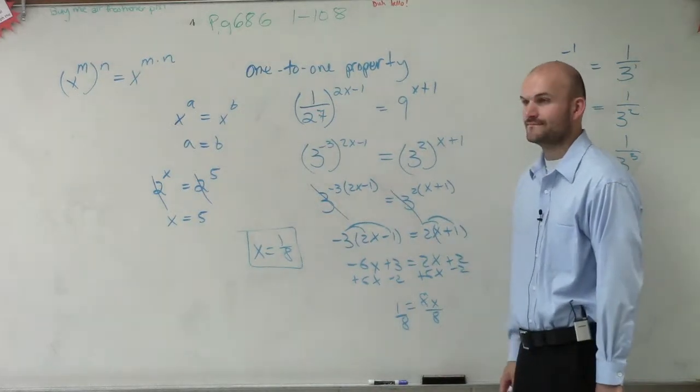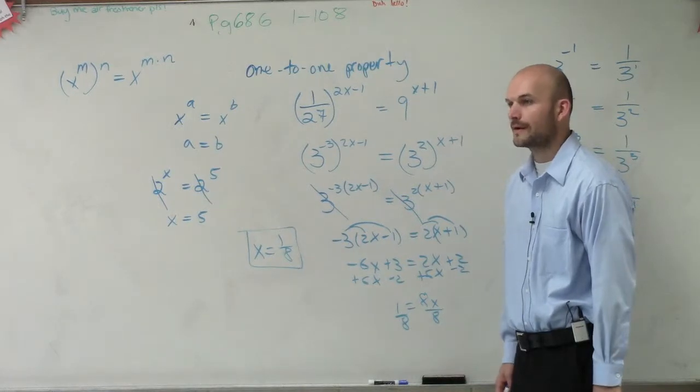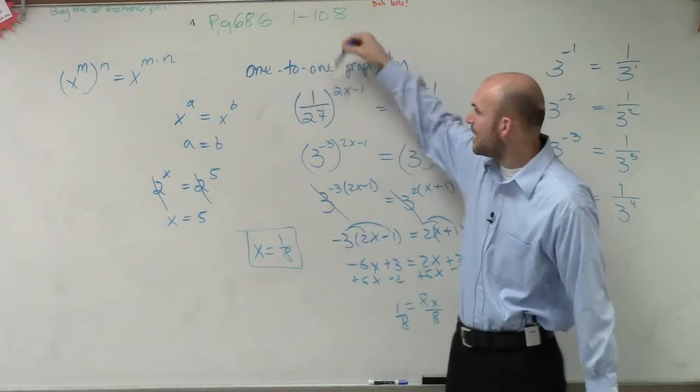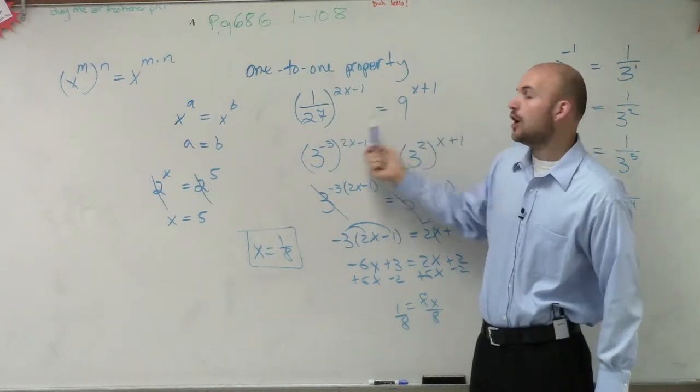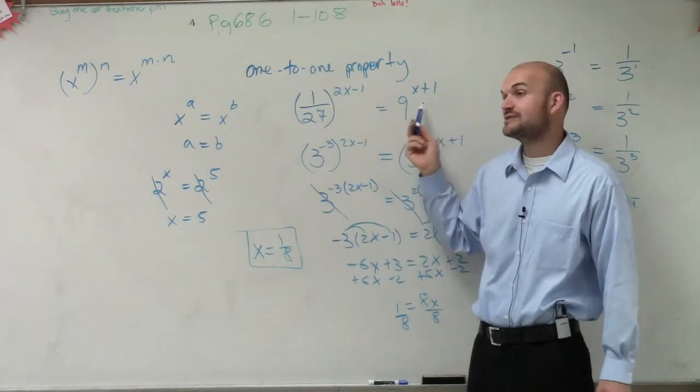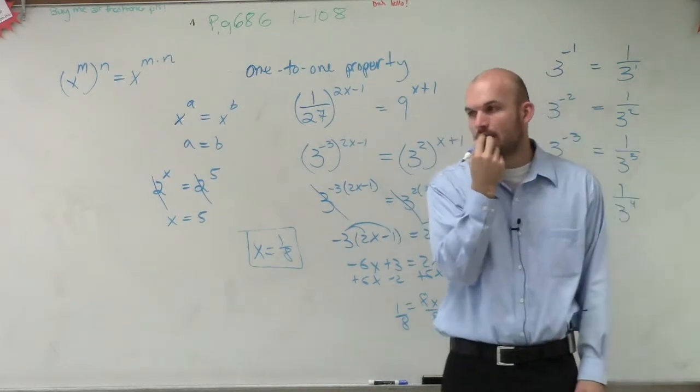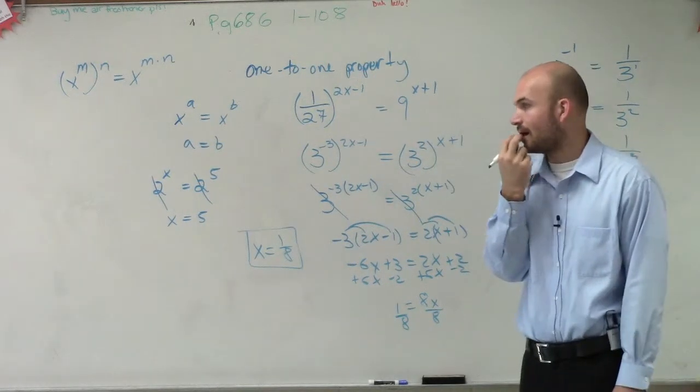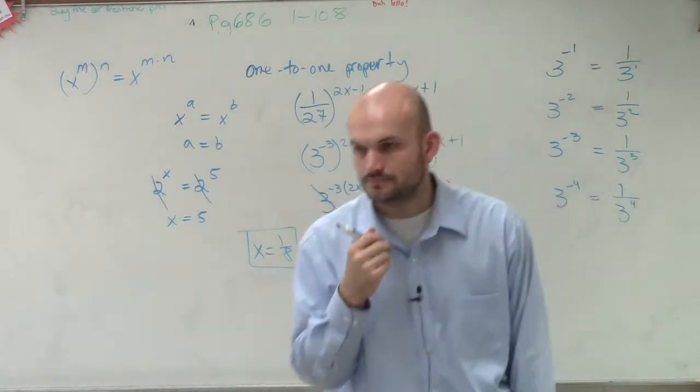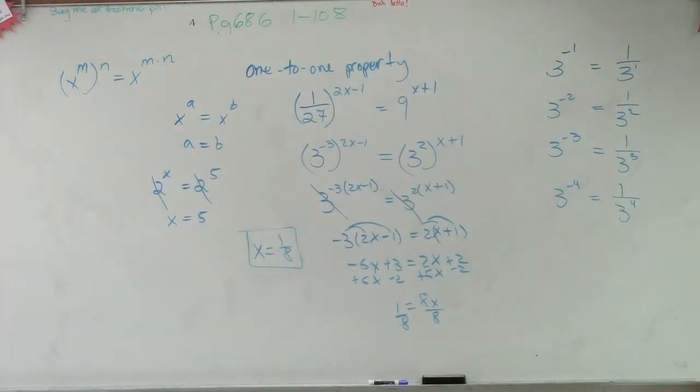Okay? Any questions in that regard? I understand, but I just never think to do that. Well, that's why we want to. That's why I'm introducing the one-to-one property. If you see powers, right? Always try to see, hey, can I get these to the same power or the same base? Because if you can get them to the same base, then you can go and cancel them. Then you can cancel out the bases. Okay? So that's that with that one. Okay? That's it.